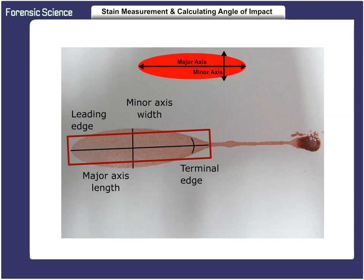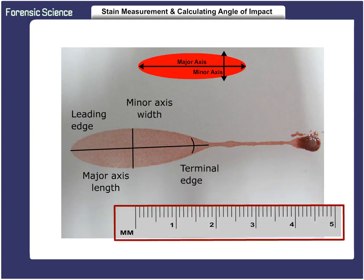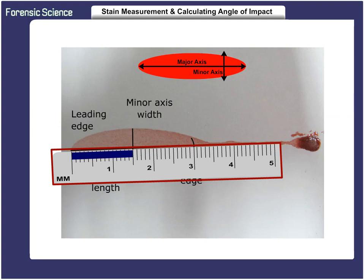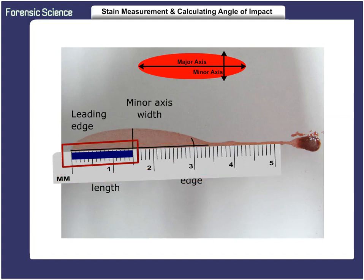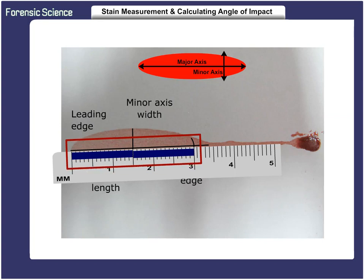The device used for measuring stains depends on the analyst. Some analysts prefer a loop with a built-in scale, while others use calipers or metric rulers. In this example, we will use a metric ruler. The major axis has been completed, and we have determined that one side of the minor axis is 1.5 millimeters. We arrived at this by measuring the distance from the center of the widest point — the minor axis — to the leading edge point of the stain. Now we double the 1.5 millimeters to make 3 millimeters, which eliminates the distortion and creates an ellipse.